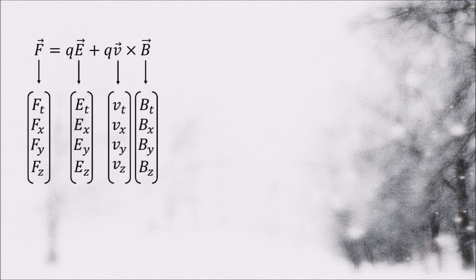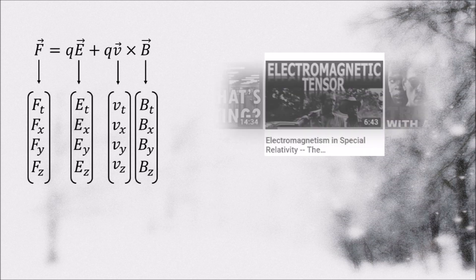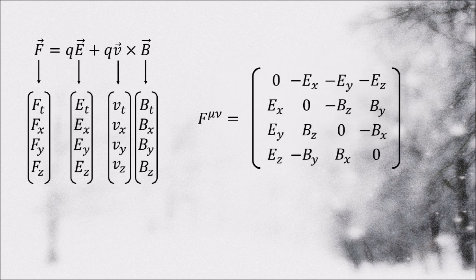Recall that in the previous video we have established that the electric and magnetic fields are not four vectors. They are components of a four tensor, the electromagnetic tensor.